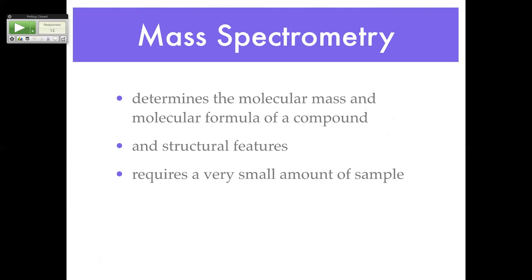Do they have a database? Yes, they've really computerized the whole deal, so it's faster. Another thing about mass spec is it only requires a very small amount of sample. Most instrumental methods don't require very much. Mass spec is important: the sample is destroyed in the analysis. So if you took all of the methamphetamine and put it in the instrument, you wouldn't have any proof left.